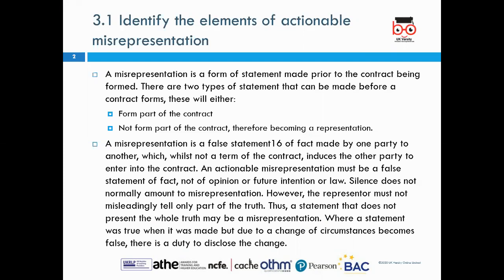Today we're going to be looking at identifying the elements of an actionable misrepresentation. Misrepresentation is a form of statement made prior to any contract being formed. There are two types of statements that can be made before a contract forms — they will either form part of the contract or not form part of the contract, therefore becoming a representation. Misrepresentation is a false statement of fact made by one party to another which, whilst not being a term of the contract, induces the other party to enter into the contract. An actionable misrepresentation must be a false statement of fact, not of opinion or future intention or law.